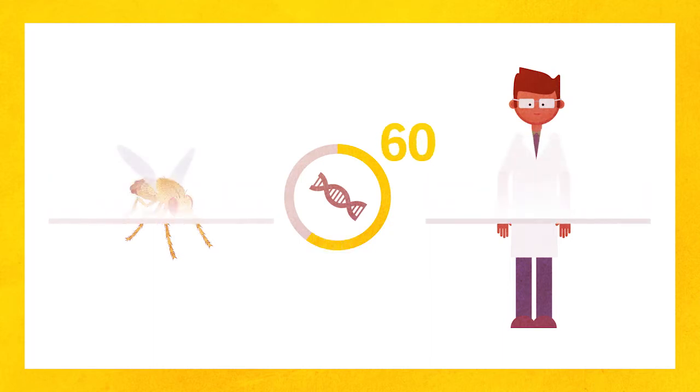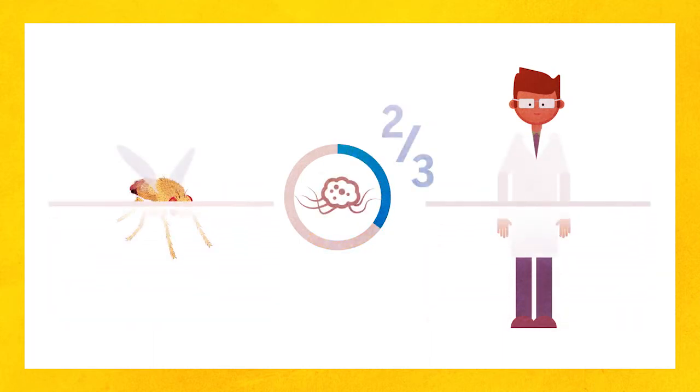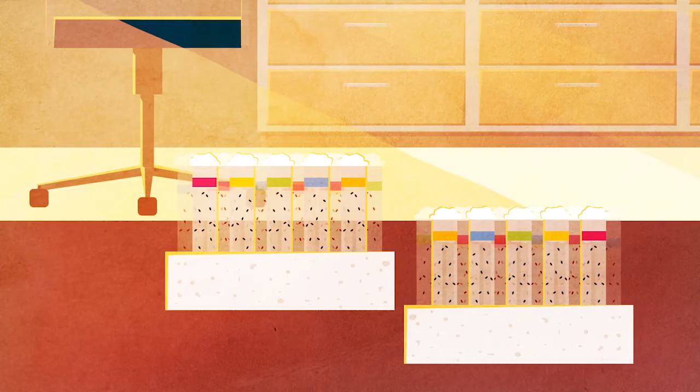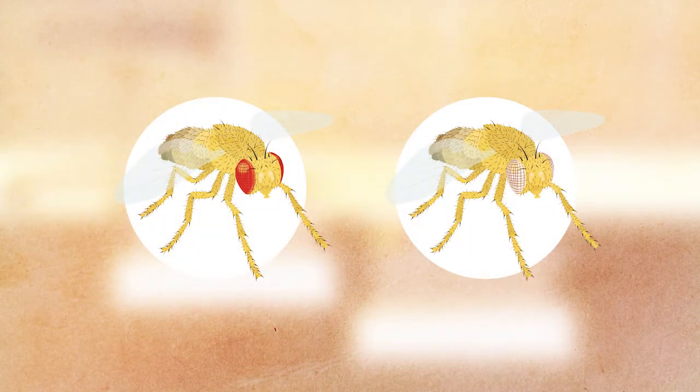About 60% of the genes in fruit flies are also found in humans, and two-thirds of genes involved in human cancers have counterparts in fruit flies. These similarities allow researchers to use fruit flies for experiments that would be impossible, unethical, or cost prohibitive in people or other complex organisms.